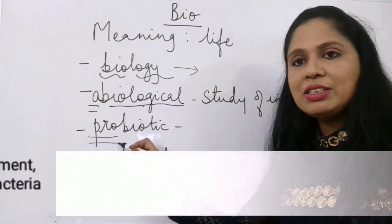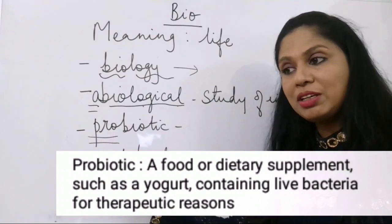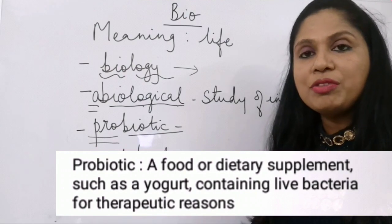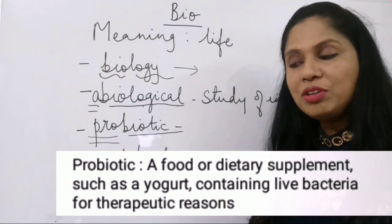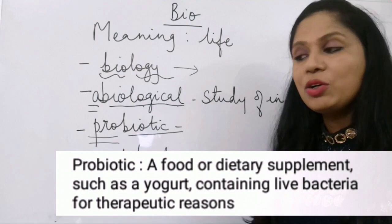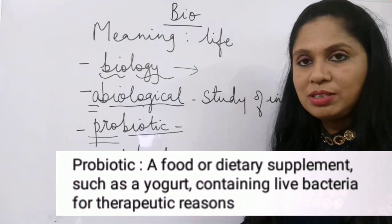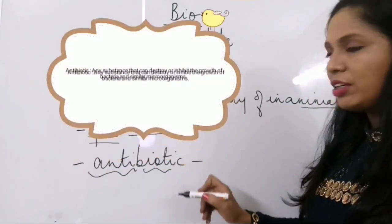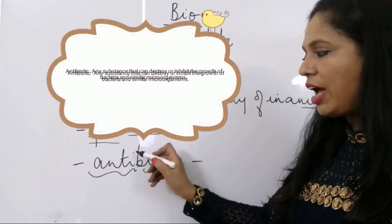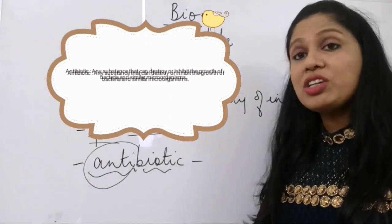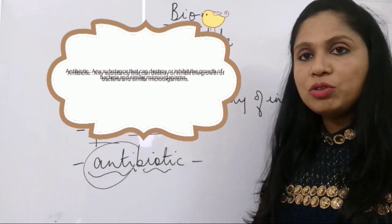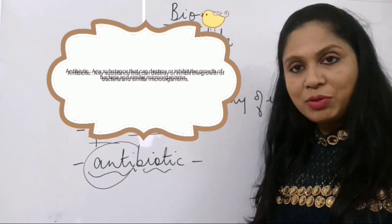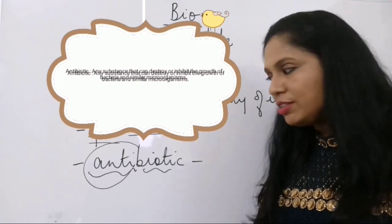Probiotic — pro means on the side of somebody or something, so probiotic is a therapeutic kind of food which enhances good bacteria in our system, for example curd. Antibiotic — anti means against, so antibiotic is something which inhibits the growth of certain microorganisms or bacteria in our body.